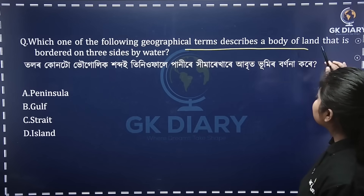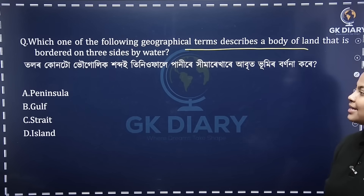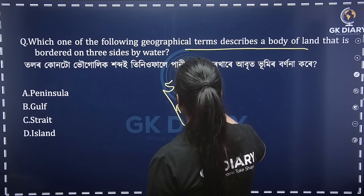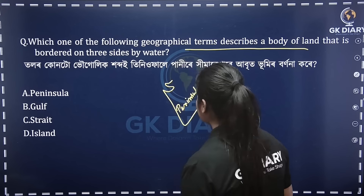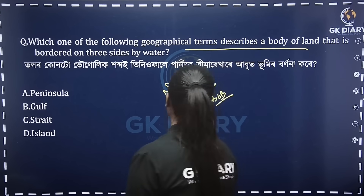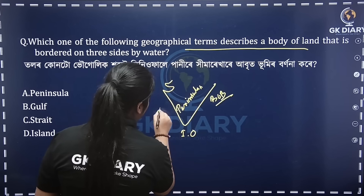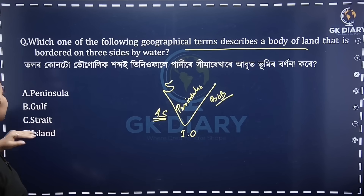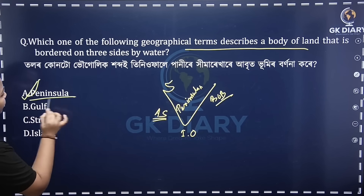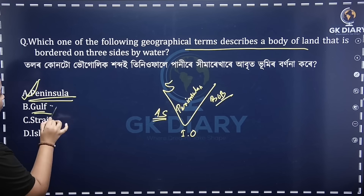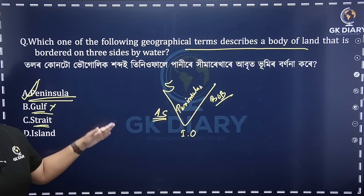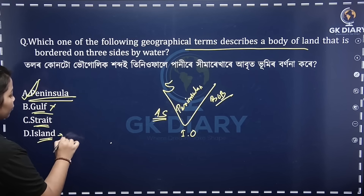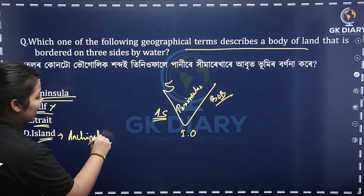Which one of the following geographical terms describes a body of land that is bordered on three sides by water? In these three sides, we can map the river as well. The peninsula is bordered by the Bay of Bengal, the Indian Ocean, and the Arabian Sea. So the correct option is peninsula. The gulf is the same — it's straight. What is it? Land as a separate water body connect. And island as a node deep. What is the peninsula called Archipelago?